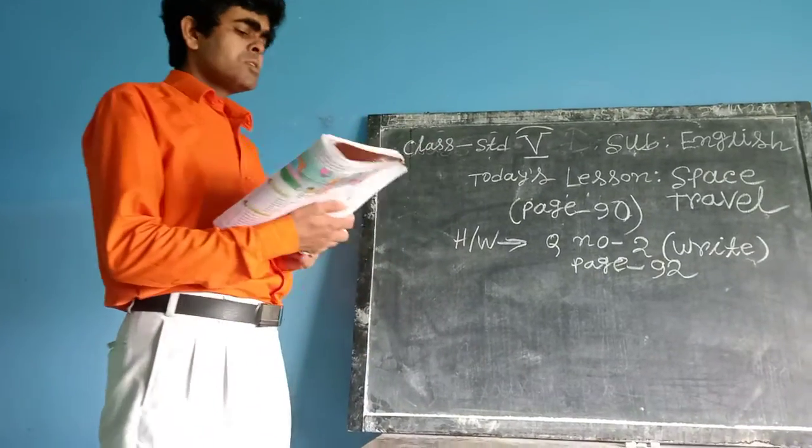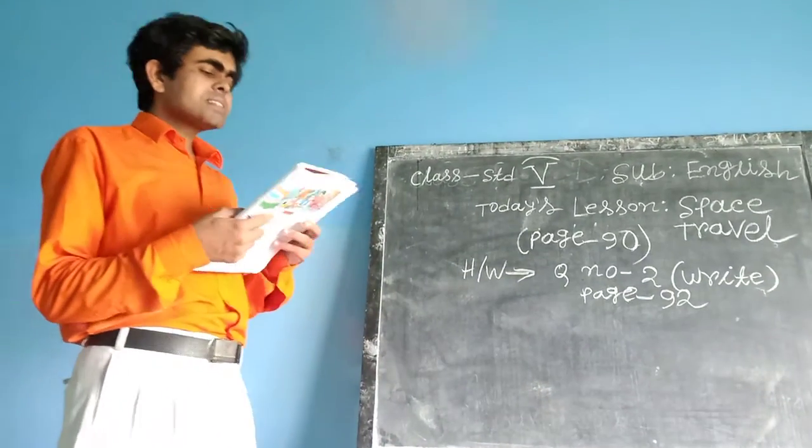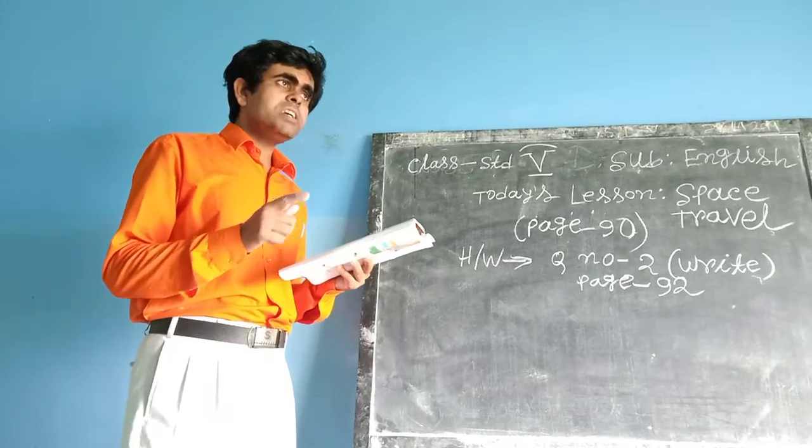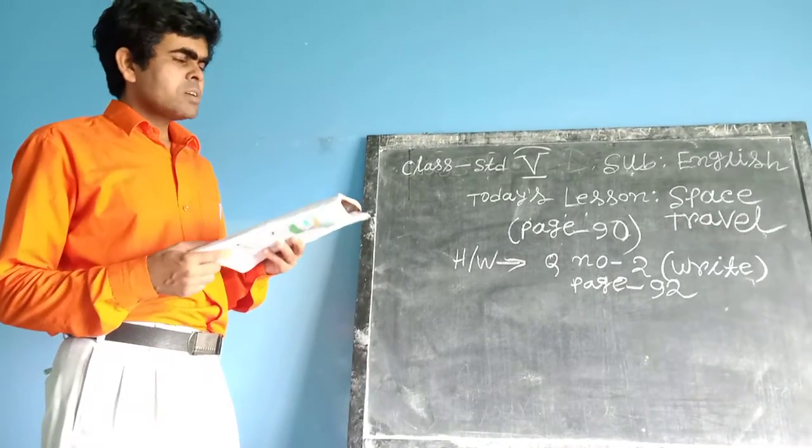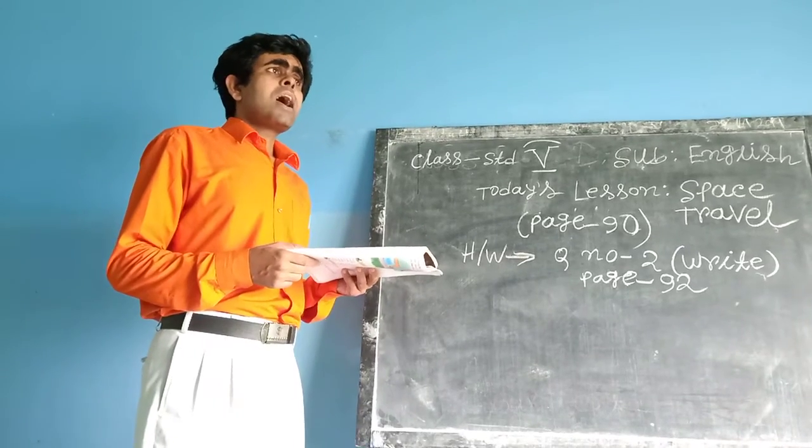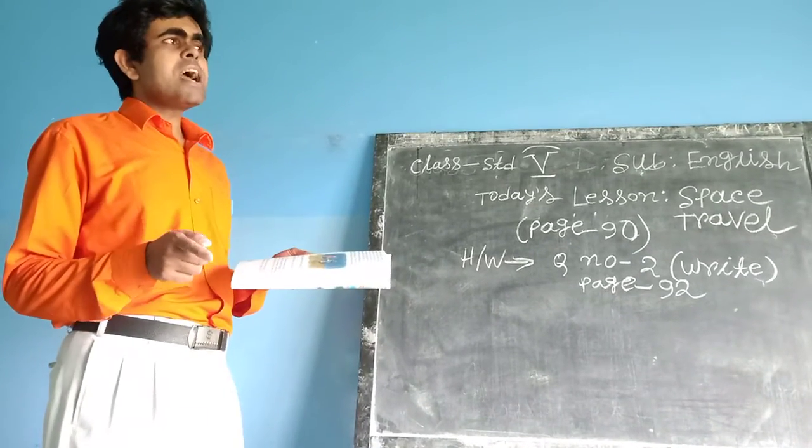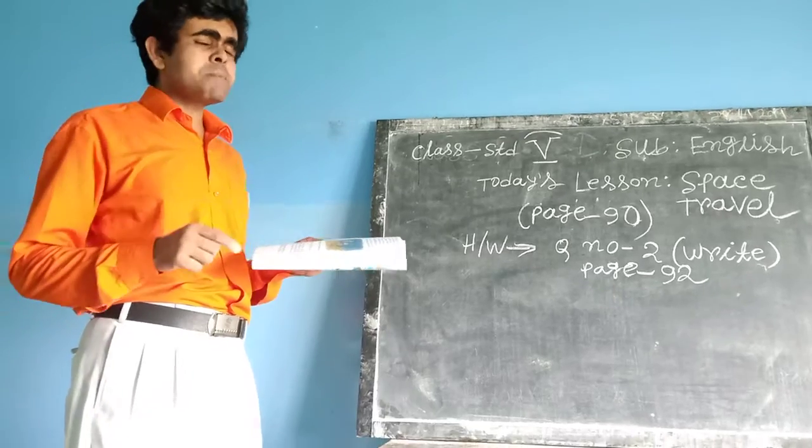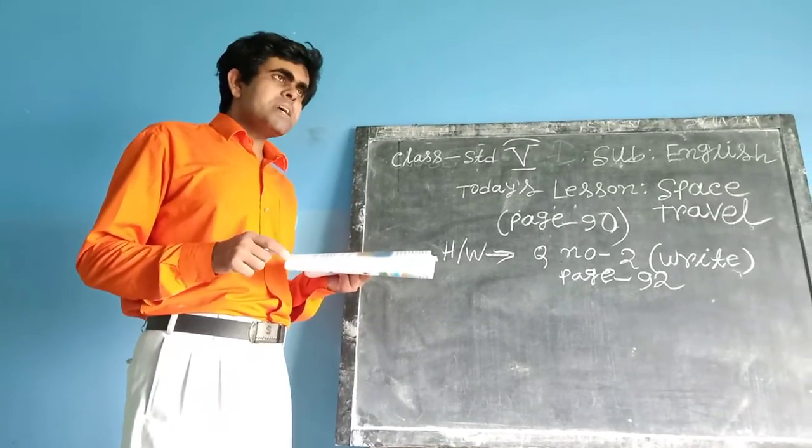At first we discuss the gist of the passage. In previous class we discussed how the two boys, Moni and Ayush, met the spaceman.